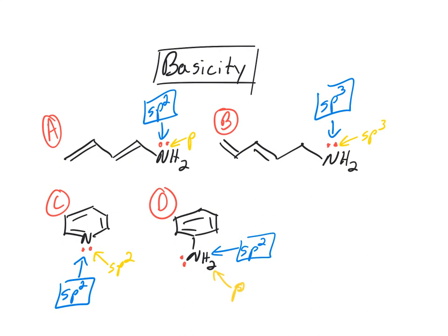What hybrid orbital is that lone pair in? P orbital. Absolutely. P orbital. Again, so that way it can do resonance. The electrons have to be in a p orbital so it can do resonance in this p orbital system with all these pi bonds. Excellent.